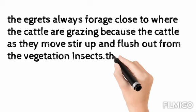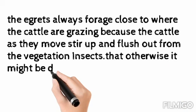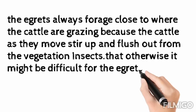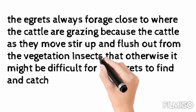The reason is that as the cattle graze and move, they stir up and flush out insects from the vegetation that would otherwise be difficult for the egrets to find and catch on their own. So the egret benefits from the cattle's movement to get its food.